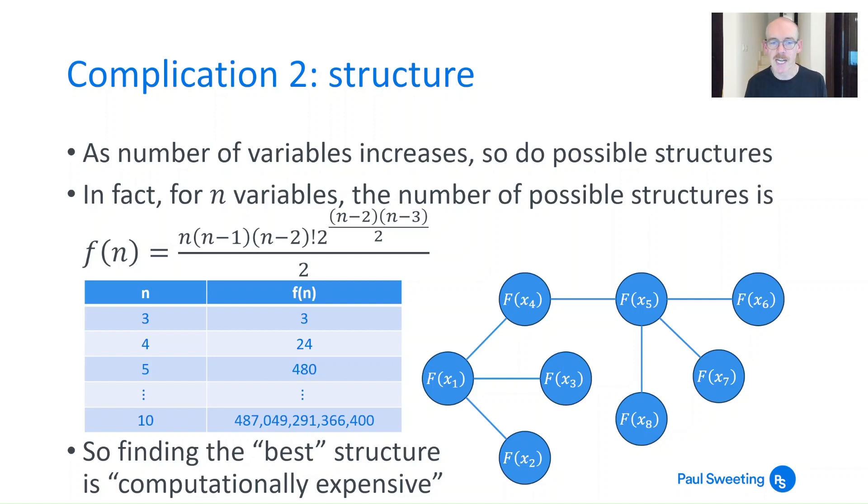So finding the best structure can be computationally expensive. There are ways around it, there are alternatives that you can use, but it's worth bearing in mind that you can't just try every single possible combination and every single type of copula in there and all the parameters you'd like to come up with the optimal one, because the computing power taken will probably for any reasonable number of variables mean it would take longer than the history of the universe so far to come up with an answer.